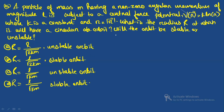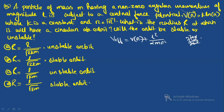For a central force problem, we write the effective potential: V_eff = V(r) + L²/(2mr²) = k·ln(r) + L²/(2mr²). For a circular orbit, V'_eff = 0. For stability, if V''_eff > 0 the orbit is stable; if V''_eff < 0 it is unstable.